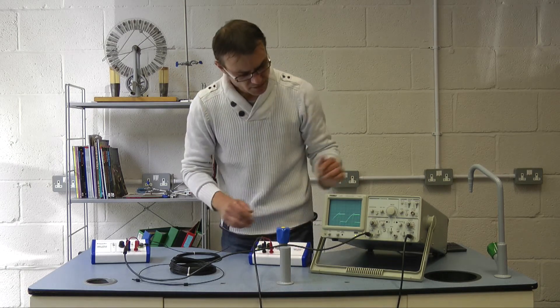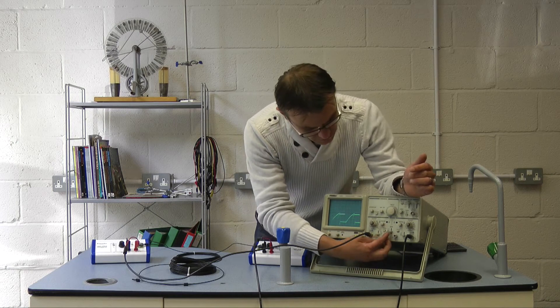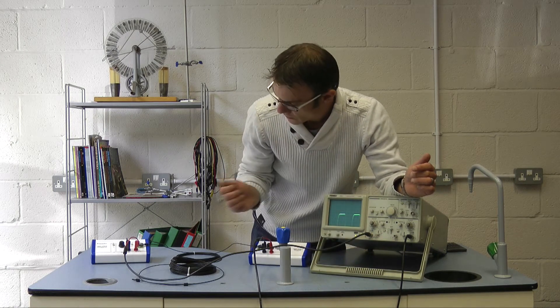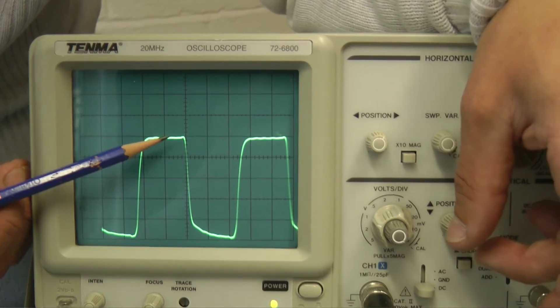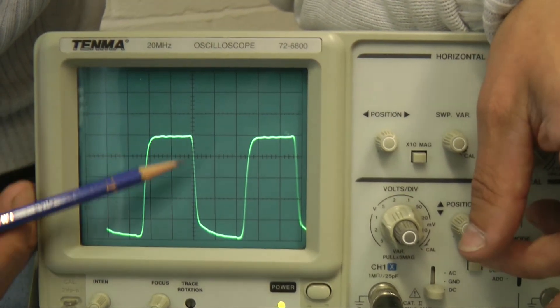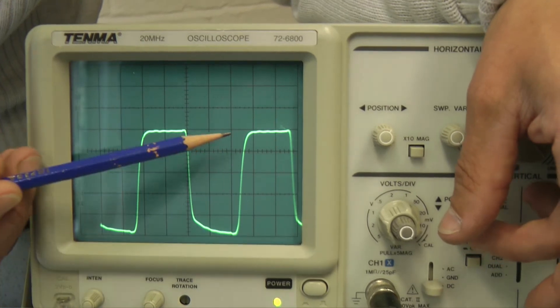So, firstly let's have a look at channel one, this is the output from the transmitter. And there it is, it's a one megahertz signal, it's falling here and rising again here.